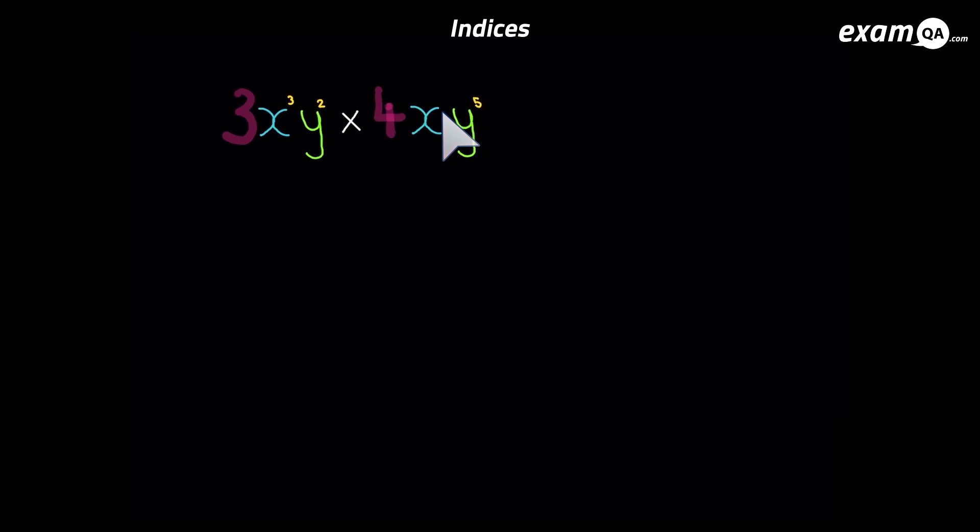Now x's powers are 3 and the other x has no power but you should remember like I said earlier that means power 1. So the new power will be 3 plus 1, 4. And with y you've got power 2 and power 5. And if you add those you should get y to power 7. And there it is. 3 times 4 gave us 12. And the powers were simply the sum of the powers from the question.